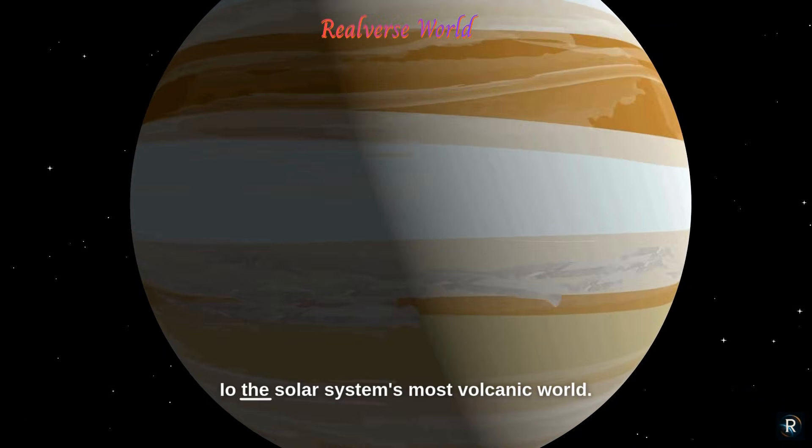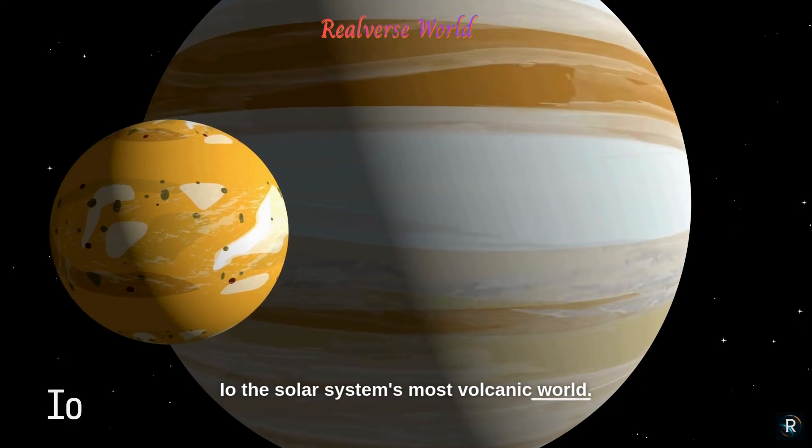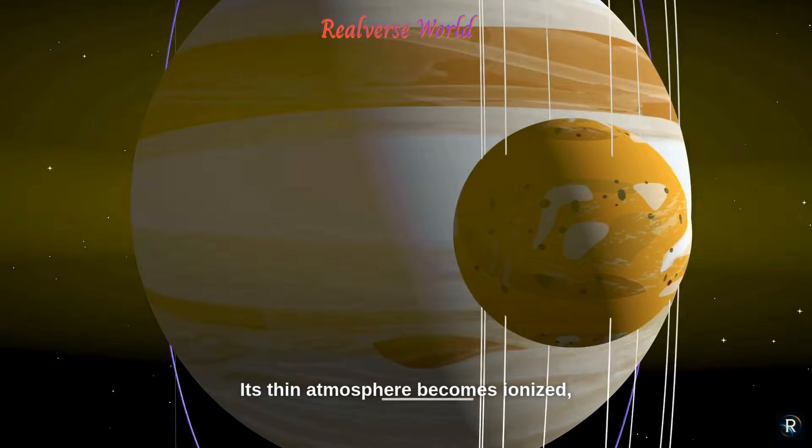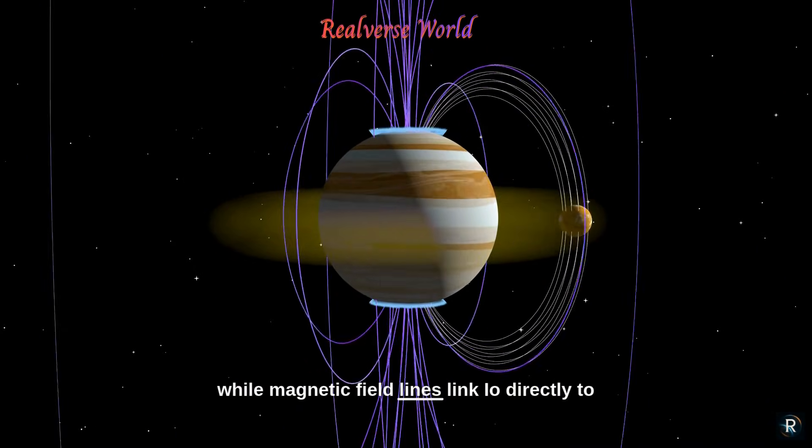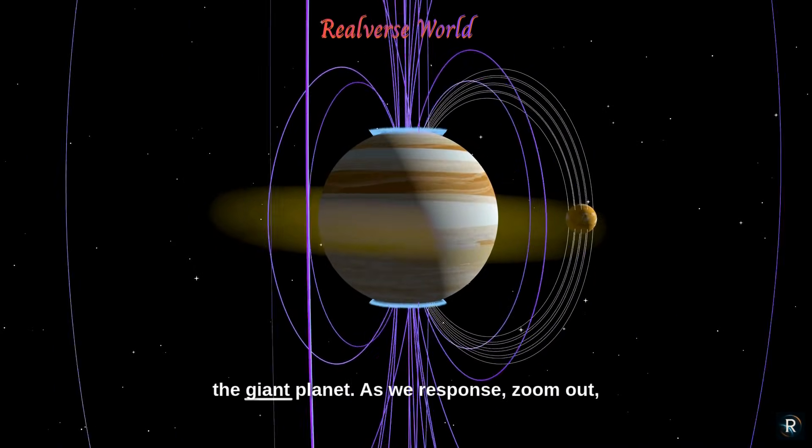And finally, Io, the solar system's most volcanic world. Its thin atmosphere becomes ionized, forming the yellow plasma ring around Jupiter, while magnetic field lines link Io directly to the giant planet.